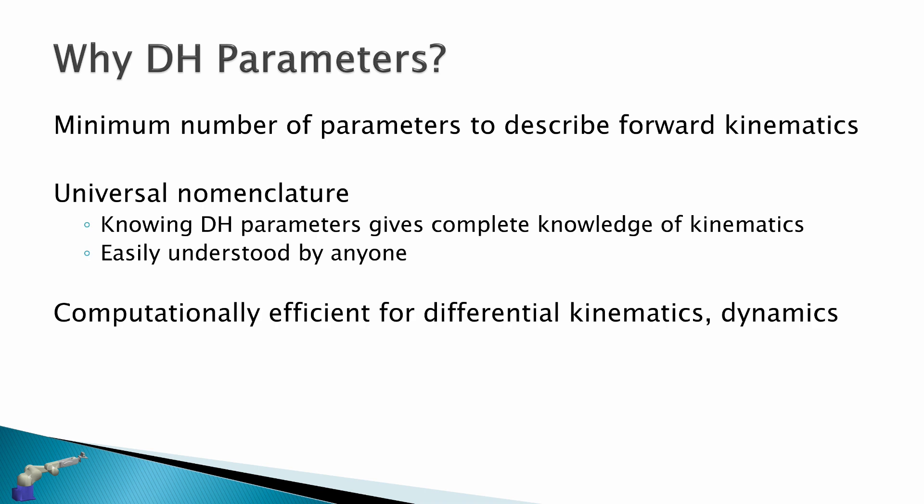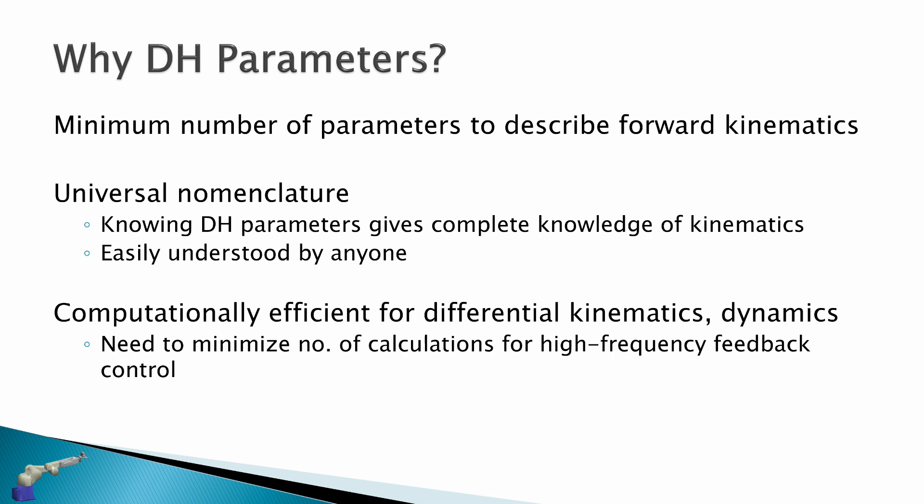DH parameters are also computationally efficient for differential kinematics and dynamics. We need to minimize the number of calculations for high-frequency feedback control. Even with powerful computers, this can still add up, especially when we have lots of sensors, lots of vision processing, and really complex robot structures. Consider that electricity travels 3000 kilometers in 0.01 seconds at 100 hertz — a huge distance in such a small amount of time.